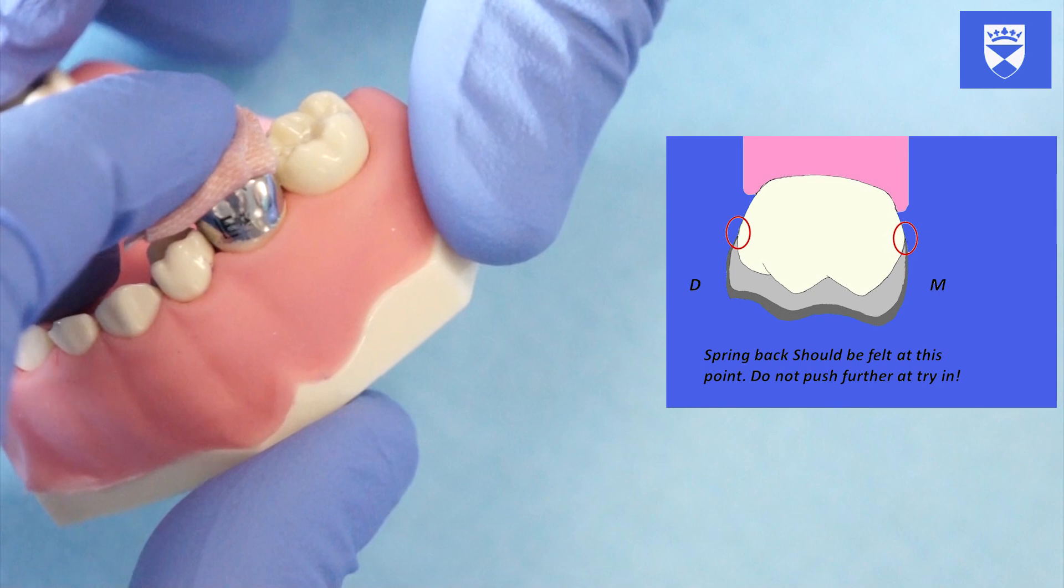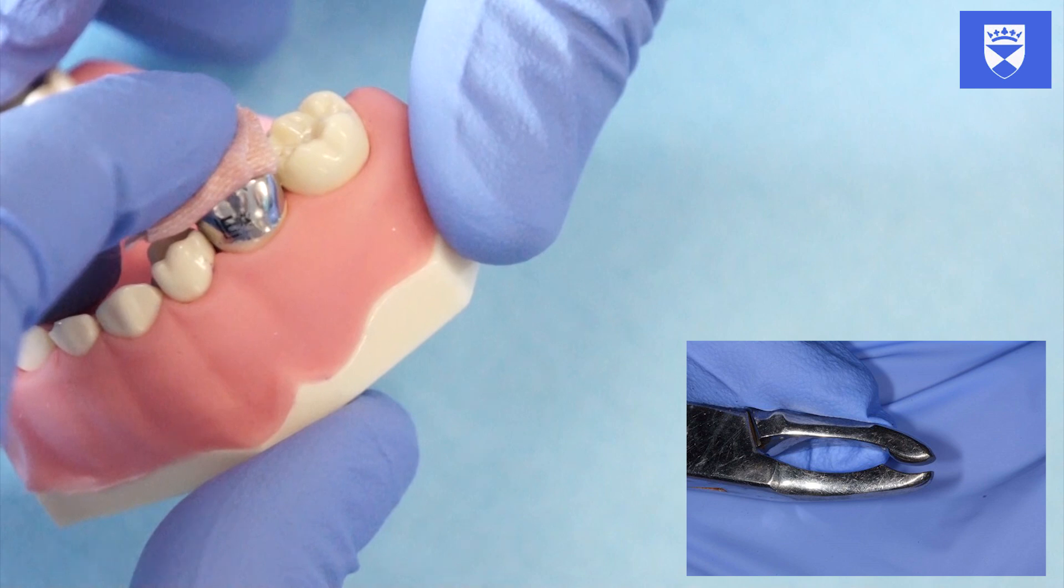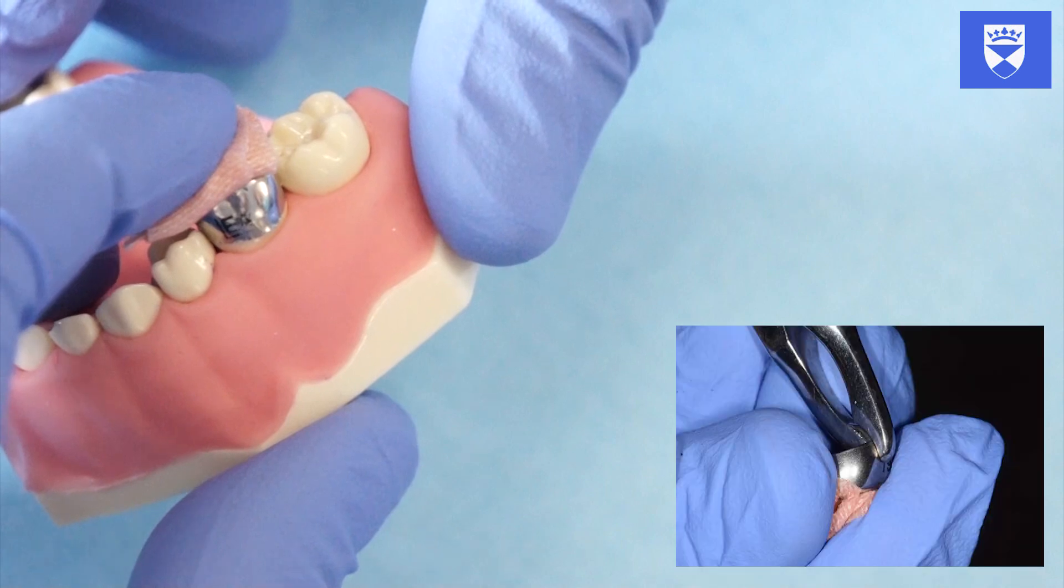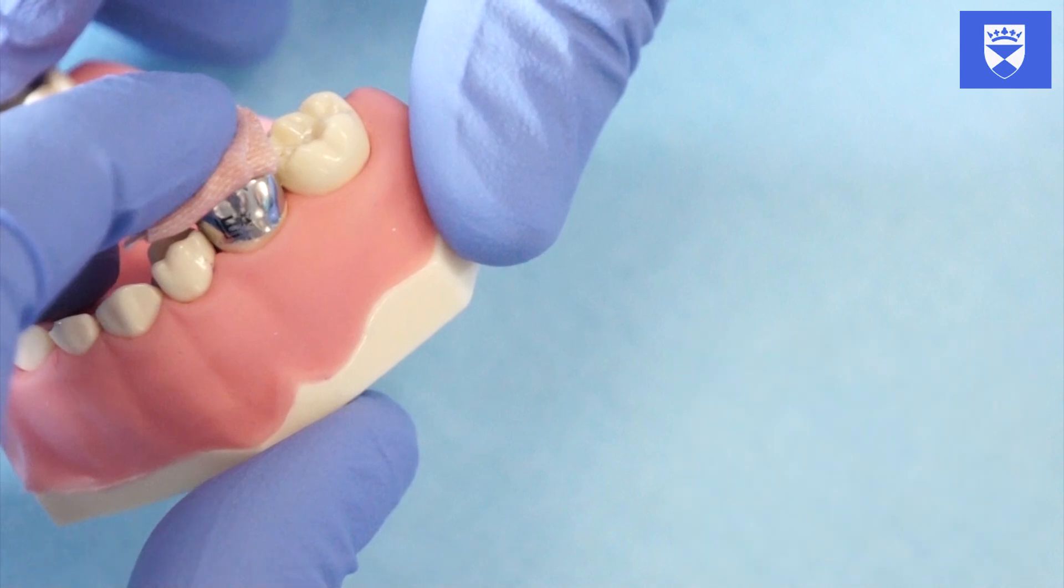If necessary, a crown may require adjustment with crown forming pliers. This will be demonstrated in your practical. Rehearse the path of insertion. Do this until you are confident that you can undertake this procedure with ease and ensure that the child is comfortable.